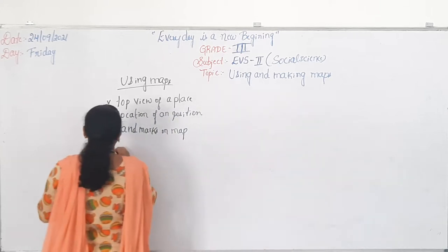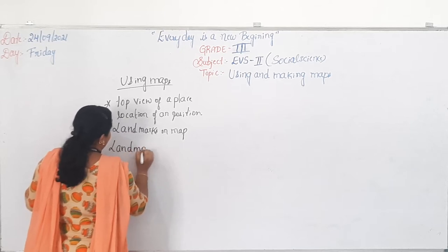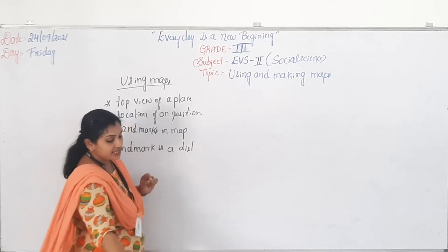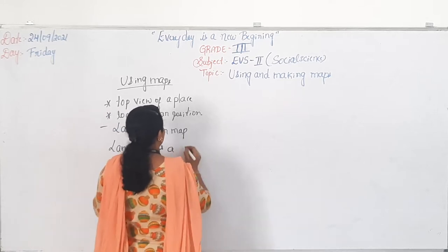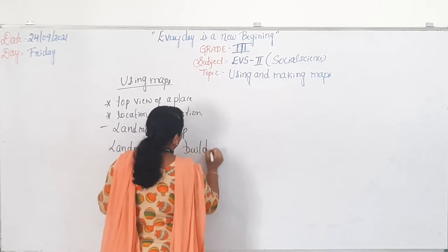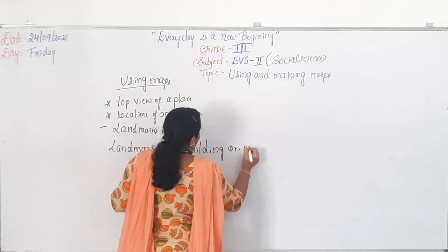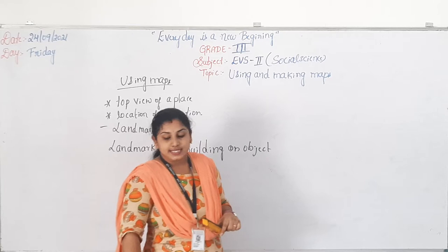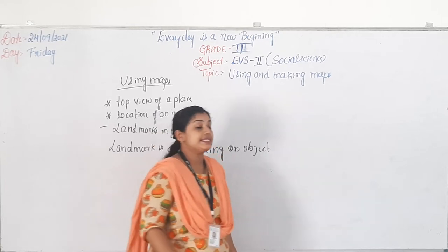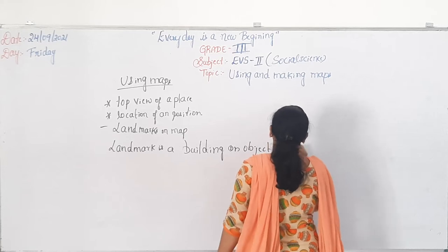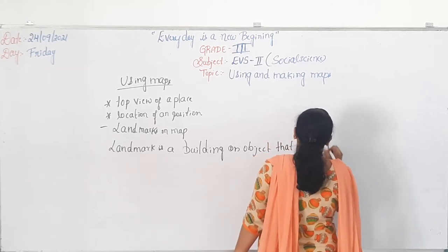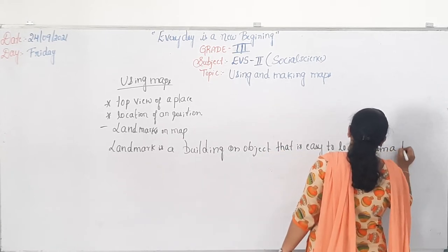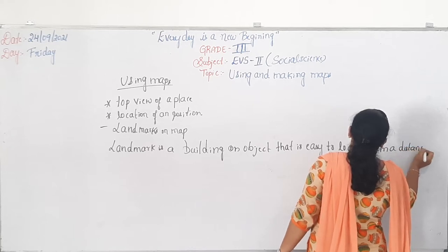I will tell you — a landmark is a building or object that is easy to locate from a distance. So the landmark is a building or object that is easy to locate from a distance.